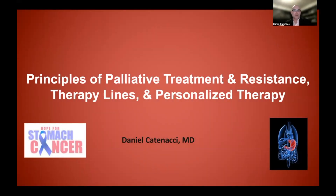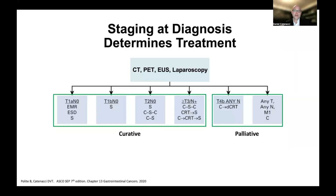In this introductory video, I'm going to be talking about the principles of palliative treatment in the stage 4 or recurrent after perioperative therapy setting. I'll also introduce the concept of treatment resistance and the thought of changing therapy to different lines of therapy, with the overarching goal of personalizing therapy to each individual patient based on their characteristics and individual goals. In previous videos, we talked about the staging of cancer and the importance of differentiating between a curative or localized setting versus a metastatic or palliative setting. We're going to focus on optimal treatments in the stage 4 palliative setting.